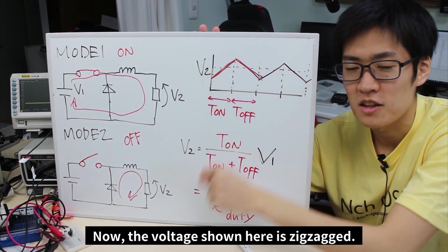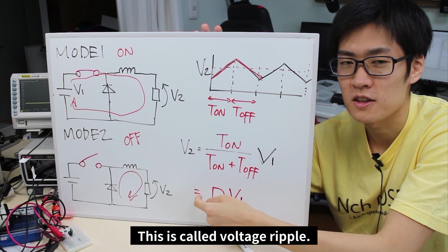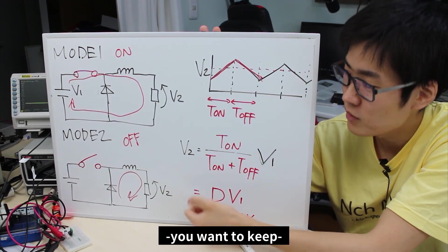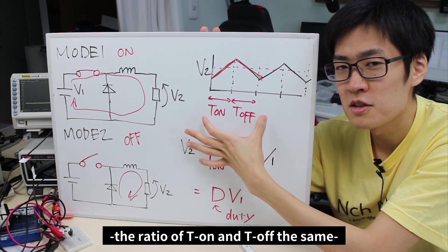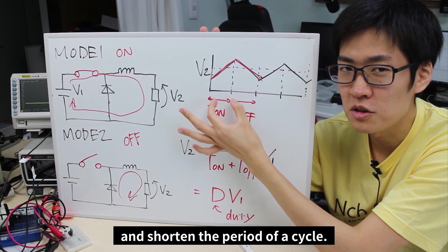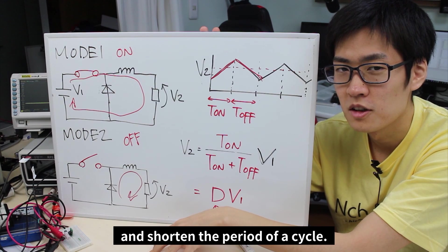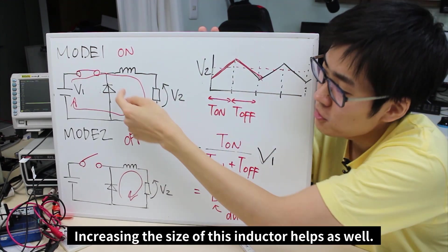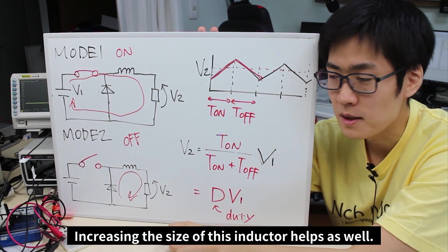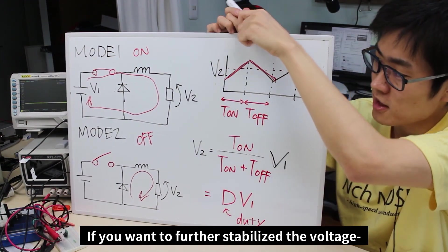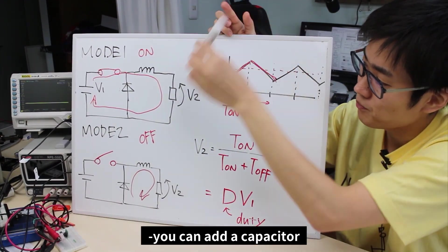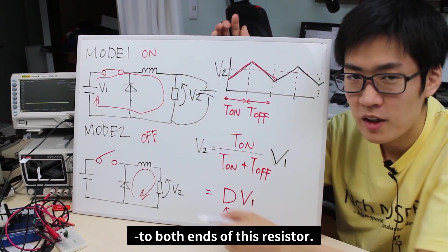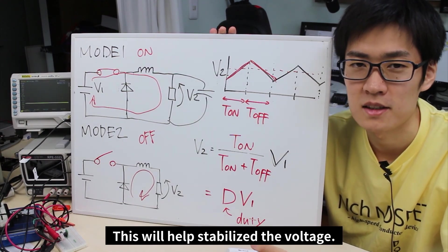The voltage shown here is in a zigzag, which is called voltage ripple. To reduce this voltage ripple, you want to keep the ratio between T on and T off the same, and also reduce the period of this cycle — this will cause the voltage ripple to decrease. Another way is by increasing the inductor size. For even further stabilization, you can also add a capacitor to both ends of this resistor, which will help stabilize the voltage.